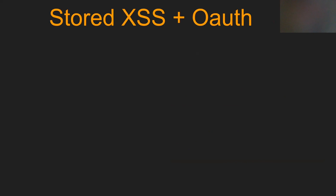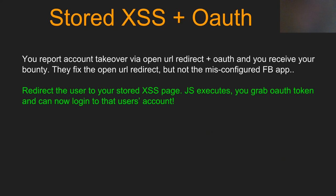Another thing people miss: they find stored cross-site scripting and report it just as stored XSS, maybe stealing session cookies. What I don't see people doing is inputting where your stored XSS is located as the redirect URL in the OAuth flow, so when it redirects to your vulnerable URL, your JavaScript runs to grab the token and re-logs you in. When companies fix the open URL redirect, they often don't fix their Facebook application. You can score a double bounty essentially.